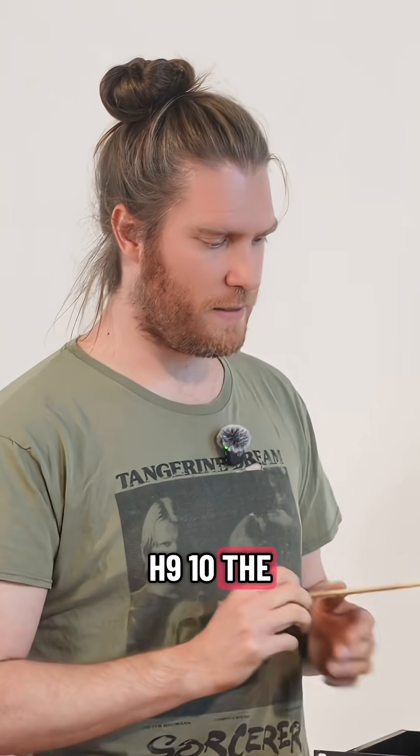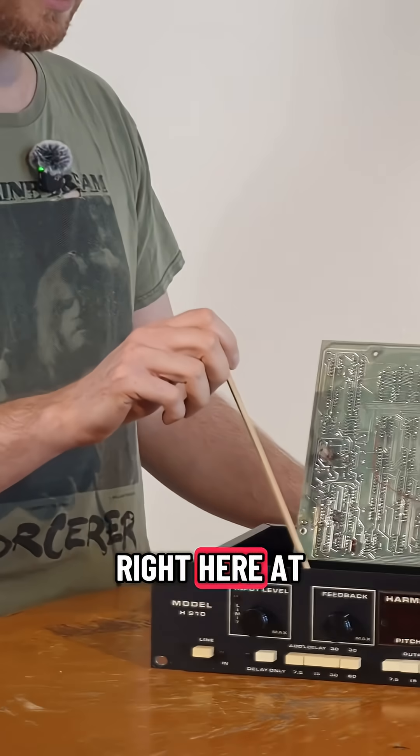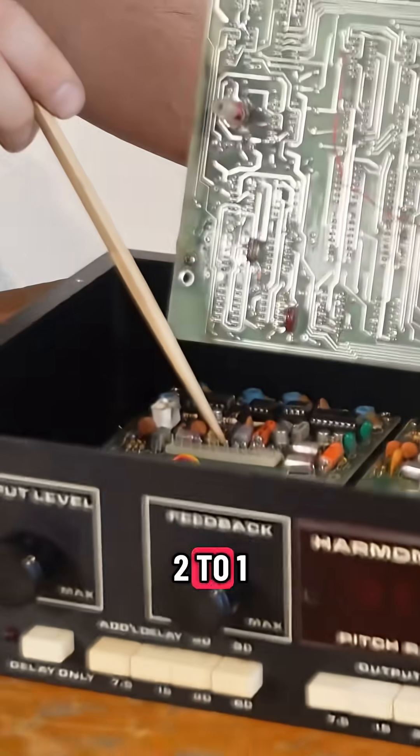So, in the H910, the audio is first compressed on this card right here at a ratio of 2 to 1.